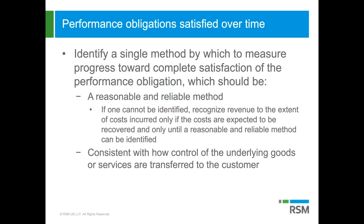If a performance obligation is being satisfied over time, you must identify a single method to measure progress to completion. The method has to be reasonable and reliable. If you can't identify such a method, you recognize revenue only to the extent of costs incurred — assuming you expect to recover those costs — and only until a reasonable and reliable method is identified. The method must also be consistent with how control of the underlying goods or services is being transferred to the customer.